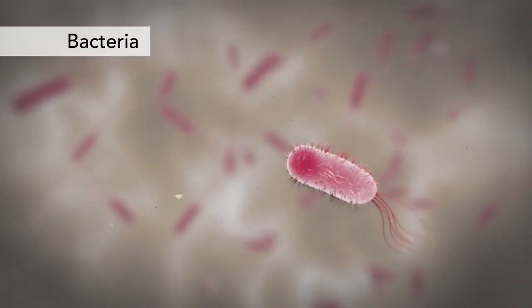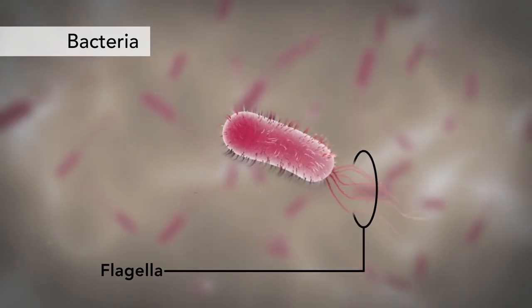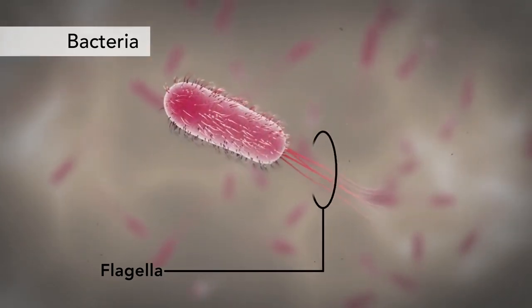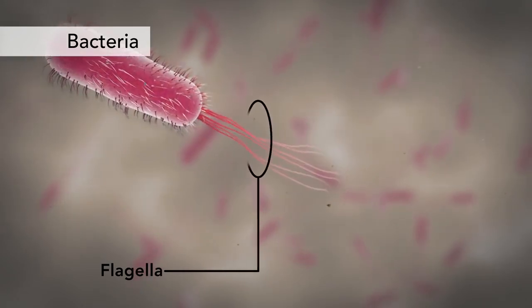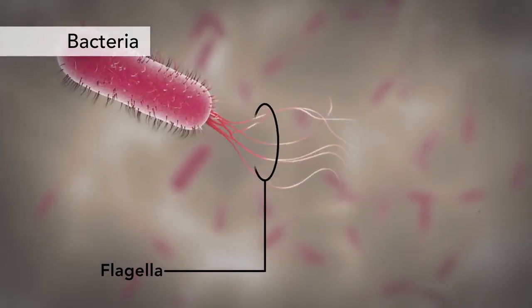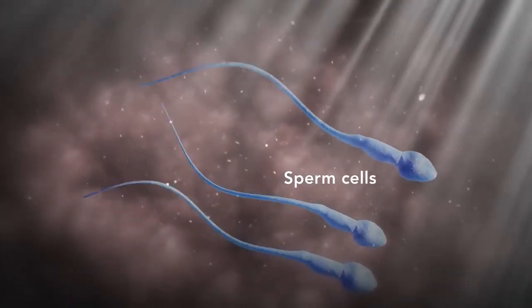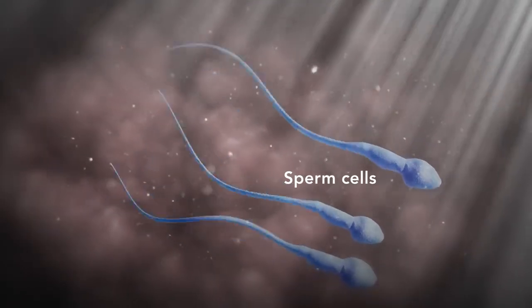Another unique feature in some cells is flagella. Some bacteria have flagella. A flagellum is like a little tail that can help a cell move or propel itself. The only human cell that has a flagellum is a sperm cell.